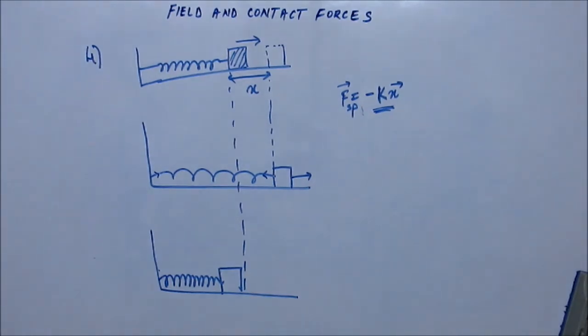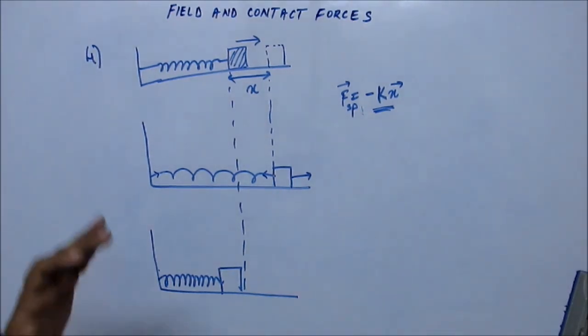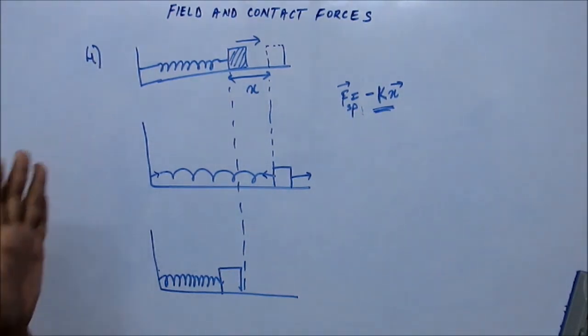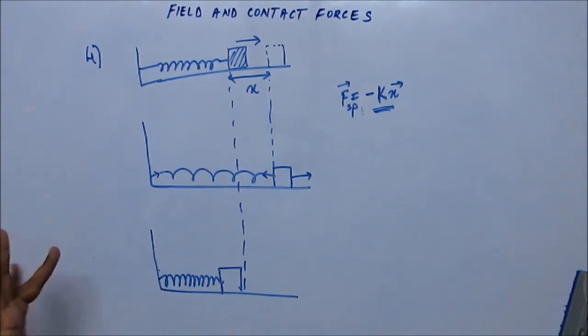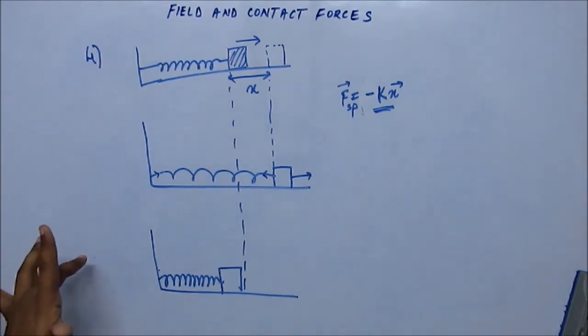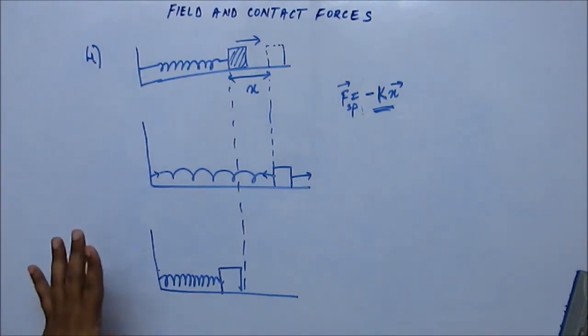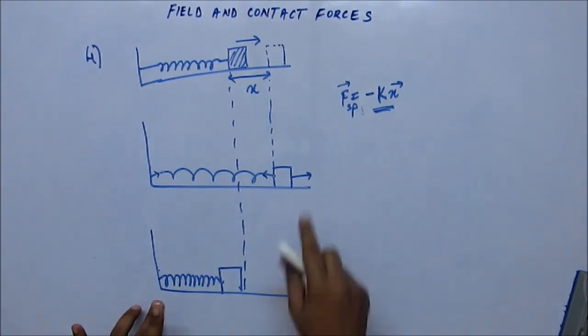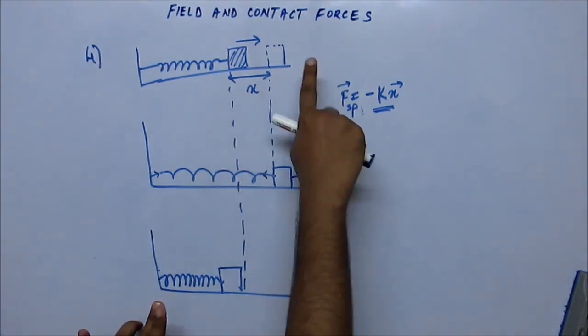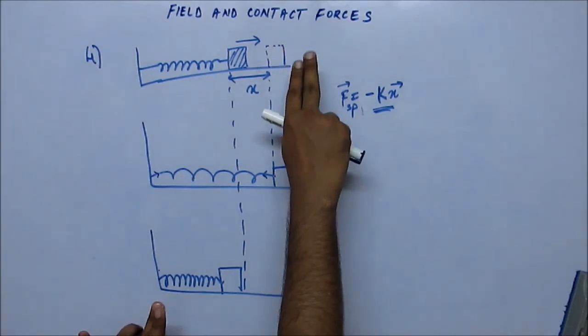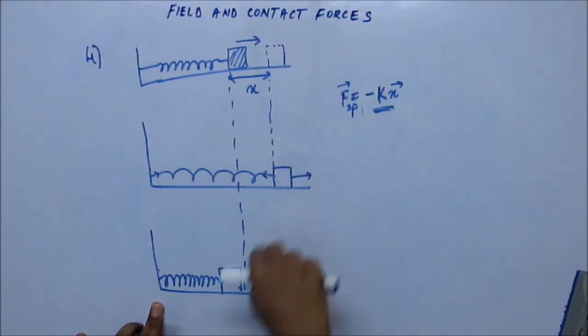So we have now learned four forces. First is gravitational force, which is a field force. Next we learned normal reaction, third tension, and the fourth spring force. All three of the remaining forces are contact forces.